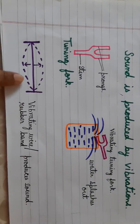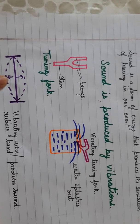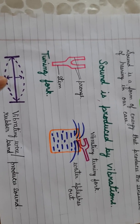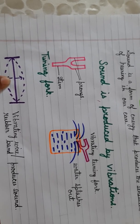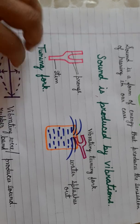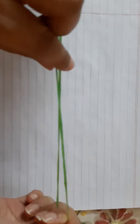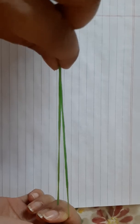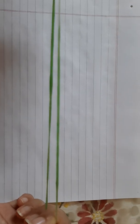Now there is another activity here. You can see that I have shown a stretched rubber band or it could be a stretched thin wire. With the help of this, we can also prove that sound is produced as a result of vibration. When I try to pluck this rubber band, you can see that it is vibrating — it is showing a to and fro motion.